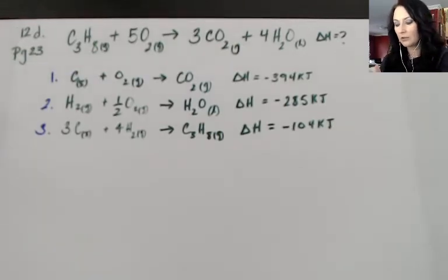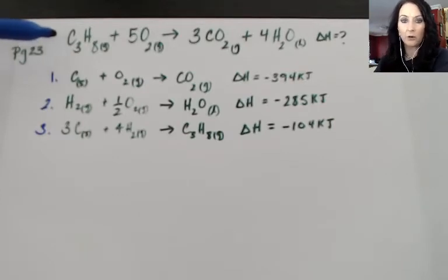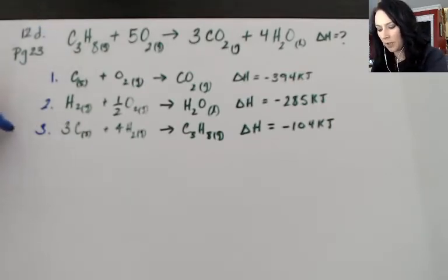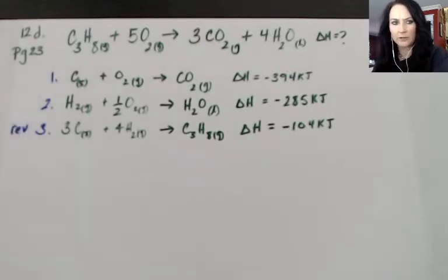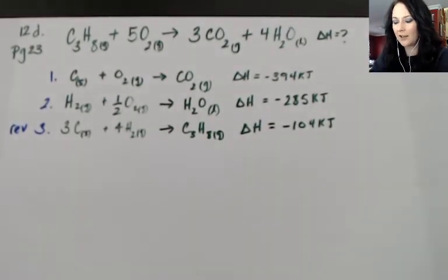I need to switch it in the opposite direction so that C₃H₈ is a reactant and not a product because I want it to be a reactant in my overall reaction. So I'm going to make a little note to myself here and I'm just going to say reverse, REV, so I will know what I need to do with that equation.